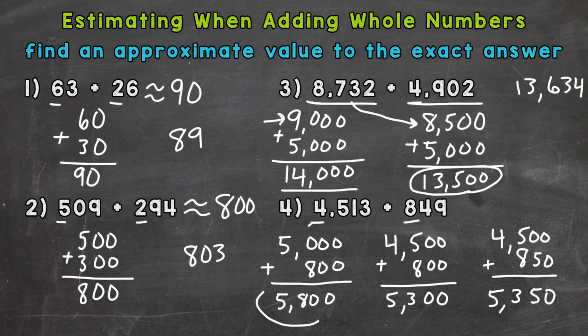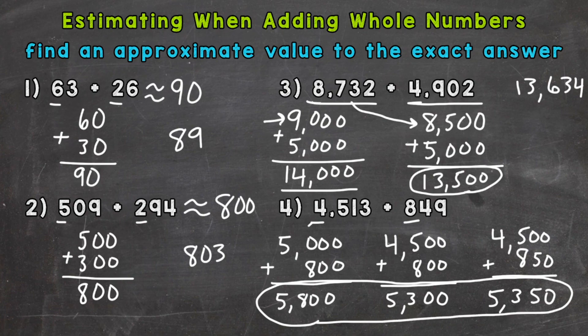So you can see that all three of our estimates are fairly close. So let's see which one got us closest to the exact answer. And the exact answer is 5,362. So that's our exact answer there.